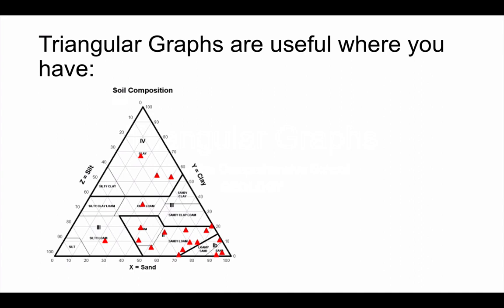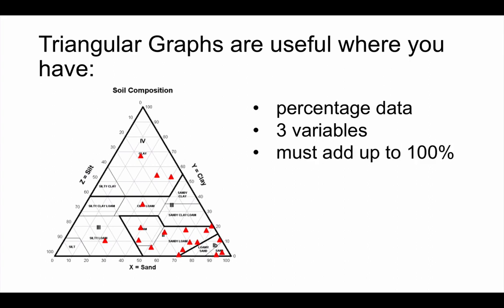Now, they're particularly useful where you have a particular set of circumstances. The data needs to be percentage data. It needs to have three variables, although one of these variables can be other if need be. And your data needs to add up to 100%. So it's a way of showing the divisions of a total where you have three variables.